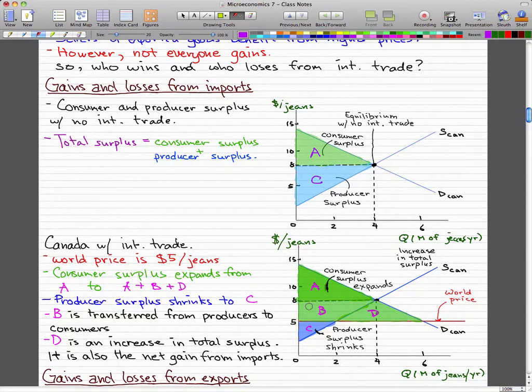So B is transferred from producers to consumers. And D is an increase in the total surplus. And we also call it a net gain or it is also the net gain from imports.